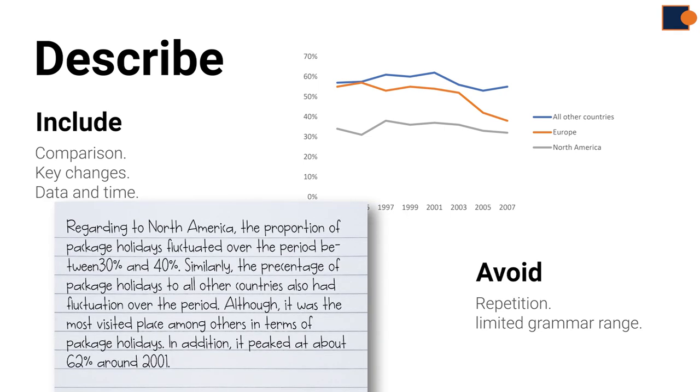Now let's take a look at the second body part, which is about North America and all other countries. So here, key changes are fluctuation over the period in both trends, and peak period to all other countries. So it is mentioned in the sample. For the comparison part, about visits to all other countries, mentioned as the highest in the sample answer. Date and time is supported in most sentences, such as 30% and 40%, 62% and around 2001.